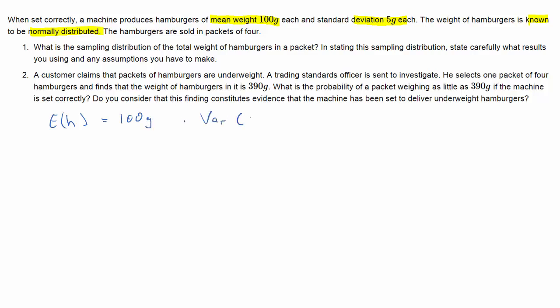The expected value of H, that's the weight of the hamburgers, is 100 grams. Variance is 5 squared, and the distribution is normally distributed with these parameters. So the first question now asks us what the distribution of the weight is in a package of four hamburgers.